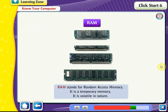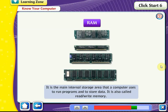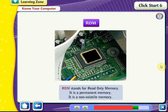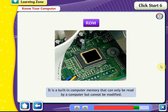RAM stands for Random Access Memory. It is a temporary, volatile memory, and is the main internal storage area that a computer uses to run programs and store data. It is also called read-write memory. ROM stands for Read-Only Memory. It is a permanent, non-volatile memory that is built into a computer and can only be read, not modified.